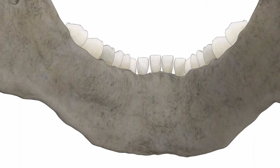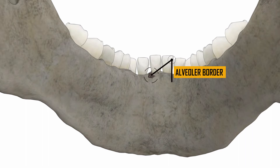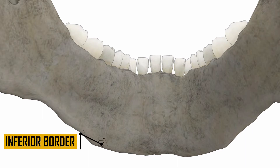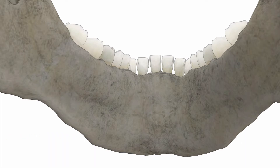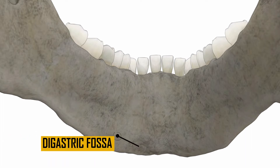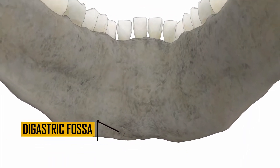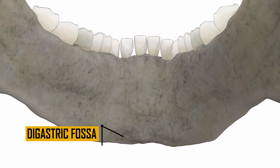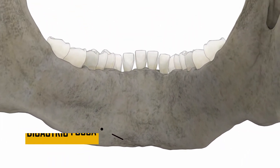The upper border is the alveolar border, which consists of sockets for the teeth. The lower border, also known as the base, has a fossa present at the side of the midline known as the digastric fossa.